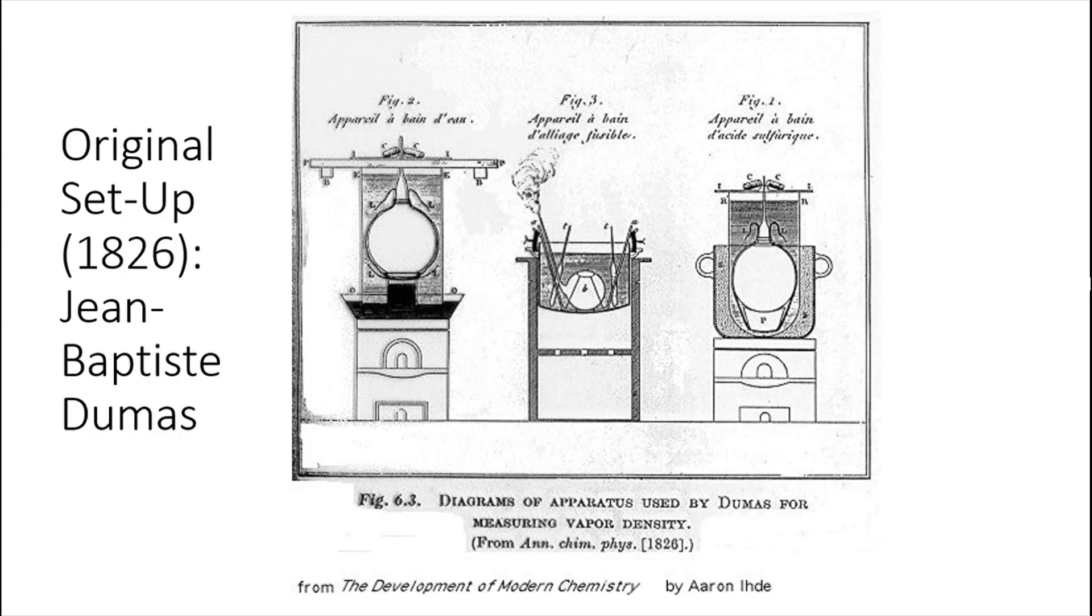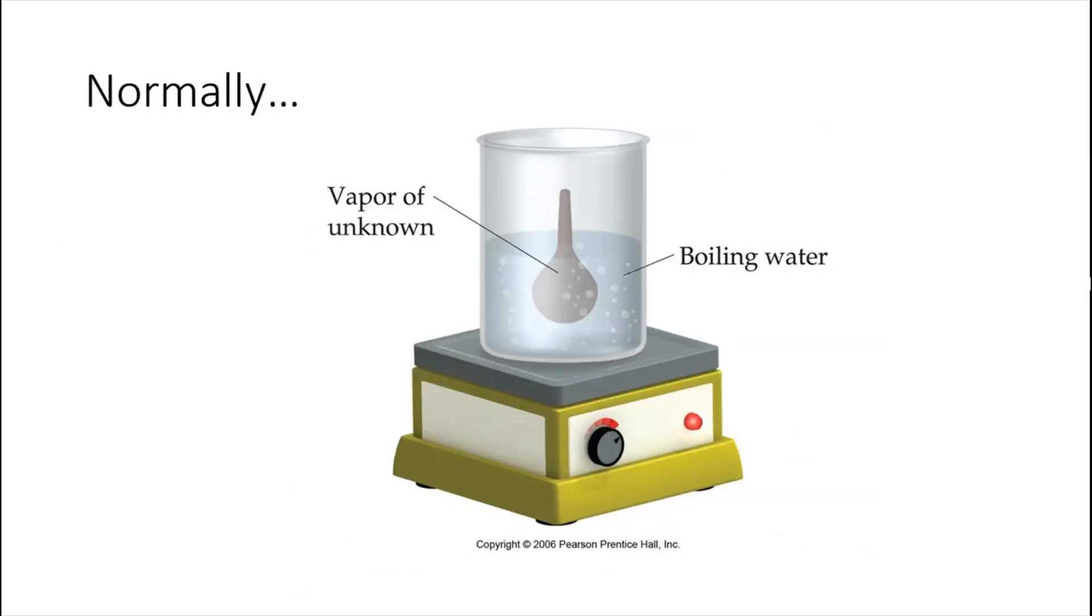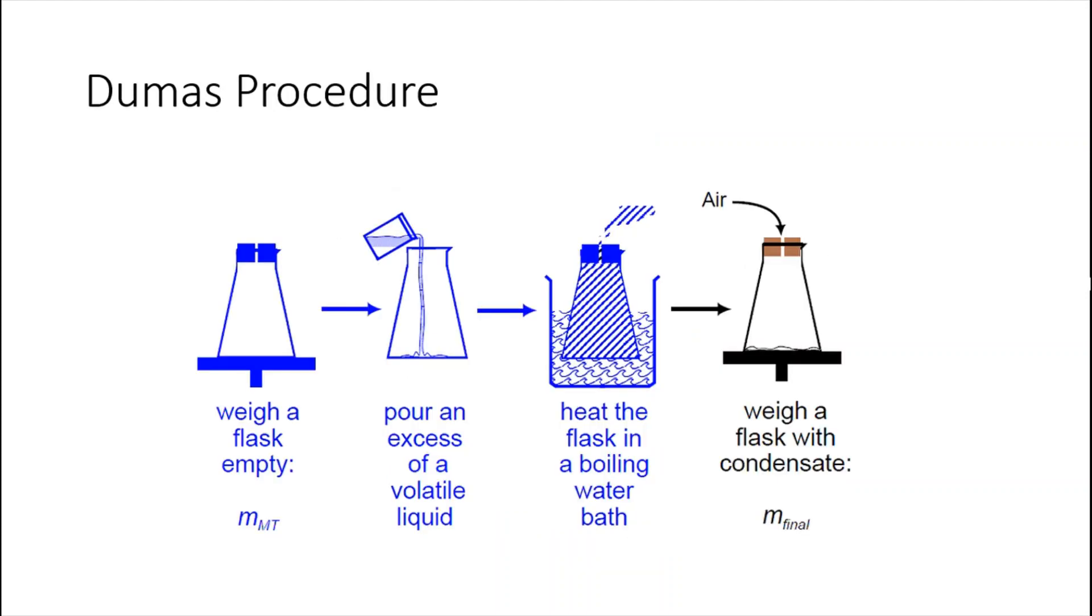We call this sometimes a Dumas experiment. Here are some diagrams of the original sketches drawn by Dumas back in 1826. Normally, if we were doing this in the lab, we would have some Duma bulb flasks, the kind of like bulb shape you see there, submerging water using hot plates. However, in the absence of that, we're going to assume that we're going to use regular Erlenmeyer flasks.